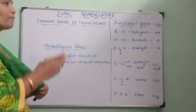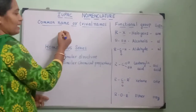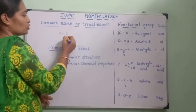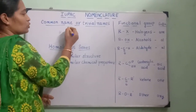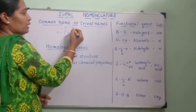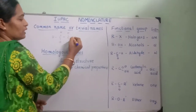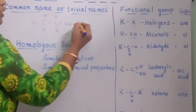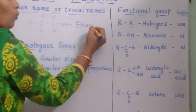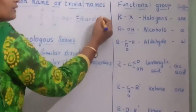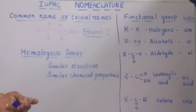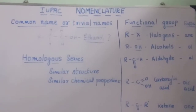For example, let us take a compound you already know — ethanol. I am writing the structural formula of ethanol, where the formula is CH3-CH2-OH. We call this compound ethanol. How did the name ethanol come for this compound? This is what we are going to study today.